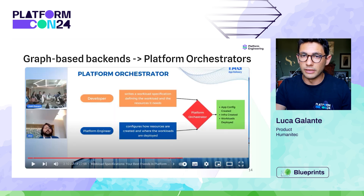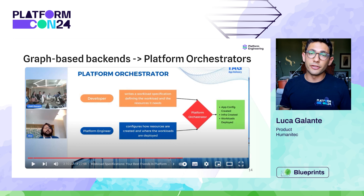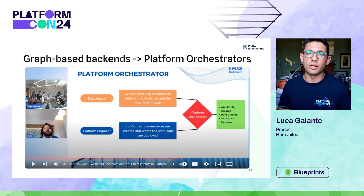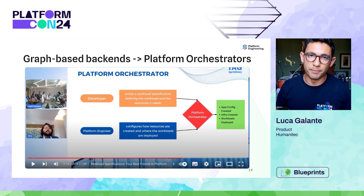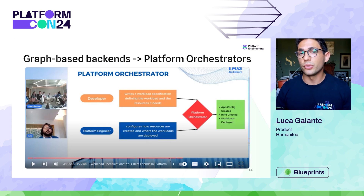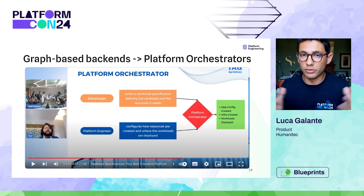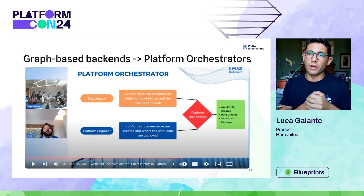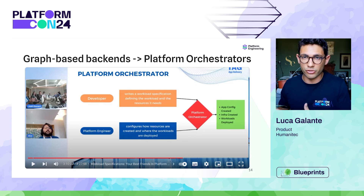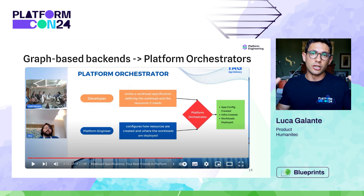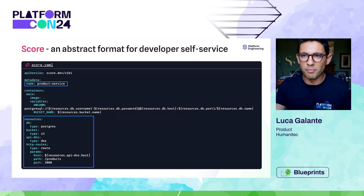So the alternative is graph-based backend designs, effectively what we call platform orchestrators. A colleague introduced this concept at the TAG App Delivery working group with the CNCF at KubeCon in Chicago. The idea is you have an abstract developer request that is matched by the orchestrator against rules set by the platform engineering team, and then fresh application infrastructure configurations are created in a graph-based representation of your workload.